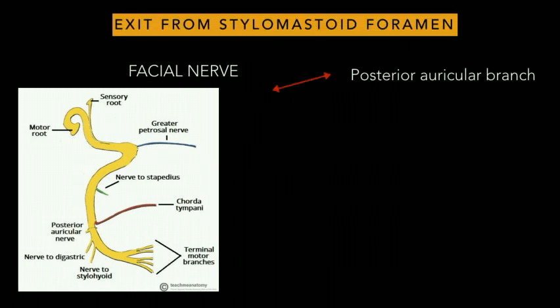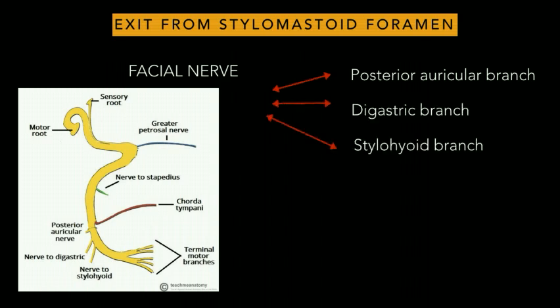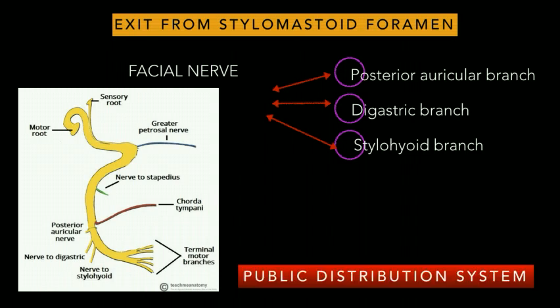After exiting from the stylomastoid foramen, the facial nerve gives out further branches: the posterior auricular branch, the digastric branch, and the stylohyoid branch. To remember these, take P from posterior auricular, D from digastric, and S from stylohyoid. A very easy mnemonic to remember this is 'Public Distribution System.'